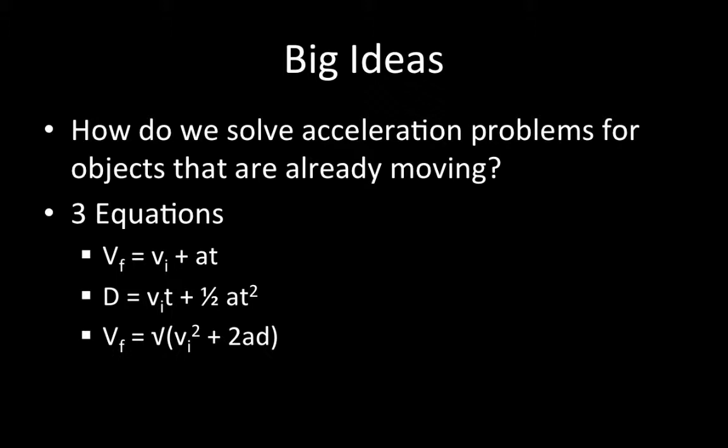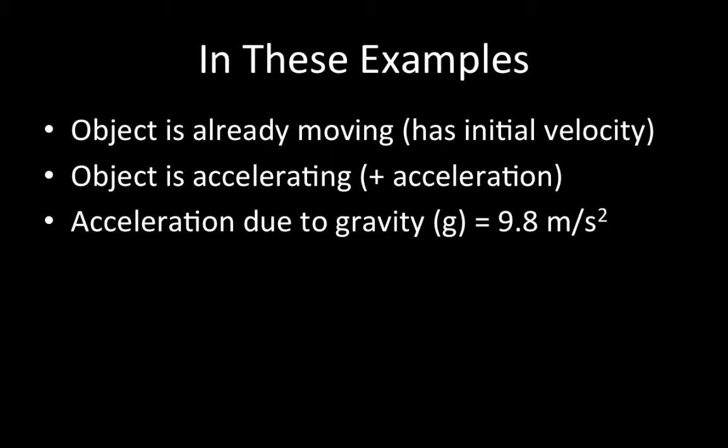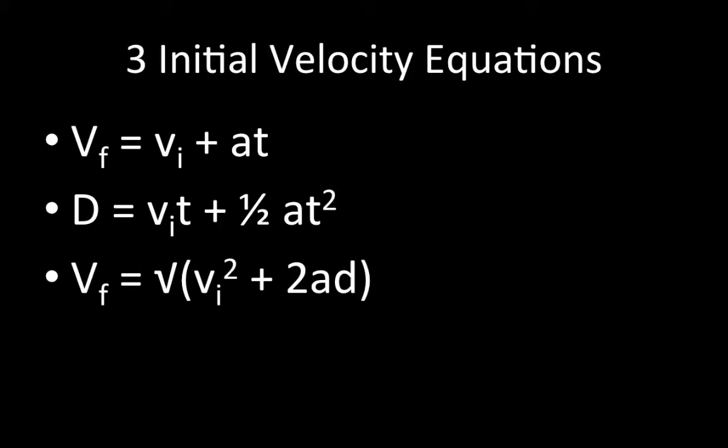So what we're going to do here is talk about the big idea: how do we solve acceleration problems for objects that are already moving? And these are the three equations that we're going to use. In these examples, remember the object is already moving — it has an initial velocity. Also the object is accelerating, so it's a positive acceleration. And in cases of free fall, the acceleration due to gravity, little g, is 9.8 meters per second squared.